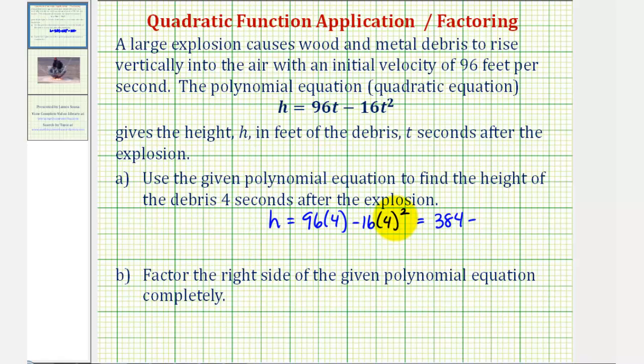And four squared is 16. 16 times 16 is equal to 256. So minus 256, this difference is 128.